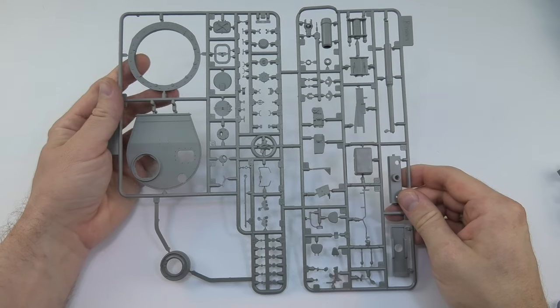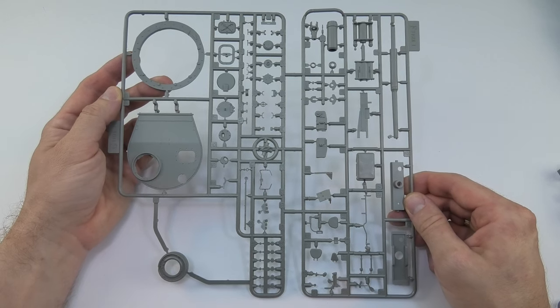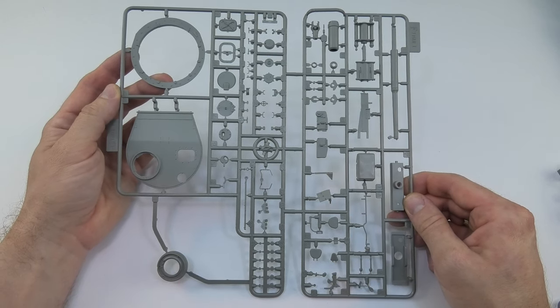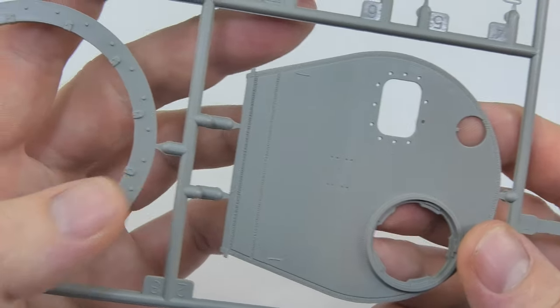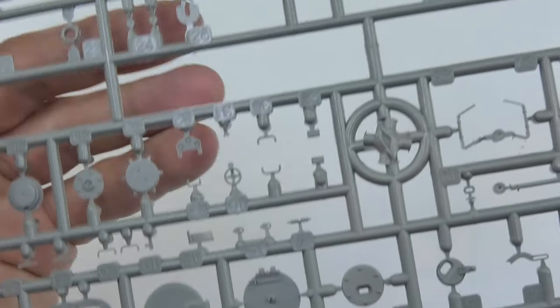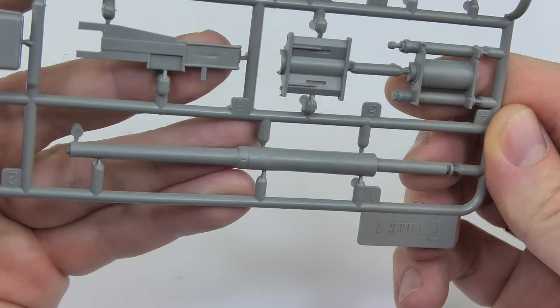Let's look at the sprues first. The elements of the turret with some parts of the interior, of course in very basic version because this is not a model with full interior. Looking closely at the elements, I have to admit that their quality is impressive at least at this stage. Although there are points where some elements could look better, but in general they are very nice.